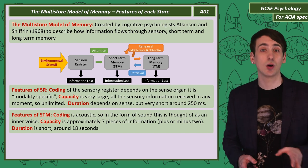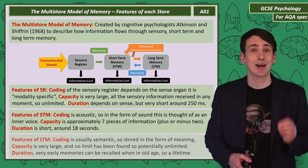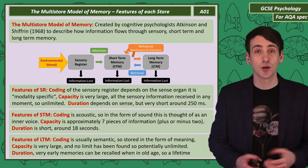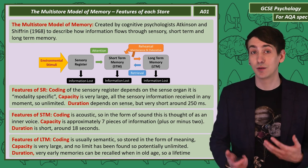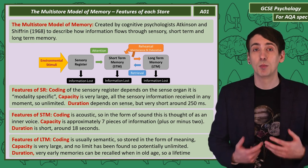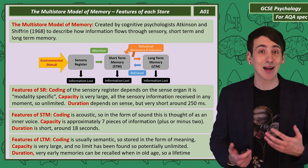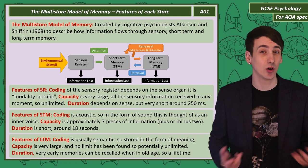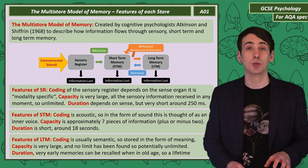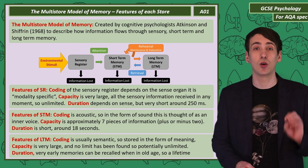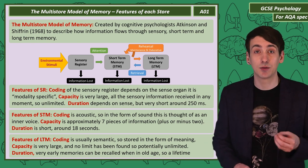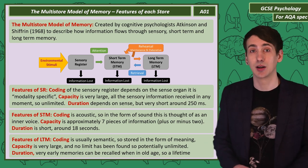Talking of long-term memory, its coding is semantic — so information in the form of meaning. Both the capacity and the duration appear to be unlimited. We can see this with older people being able to recall lots of information about their lives, even from their earliest years.